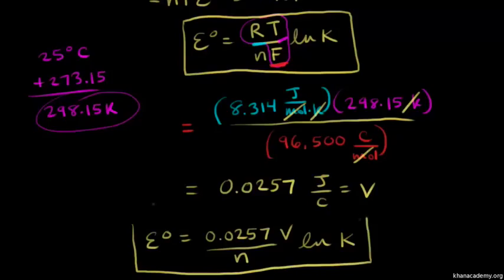So this is one form of the equation that relates the standard cell potential E zero to the equilibrium constant K.